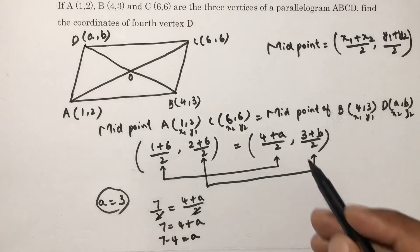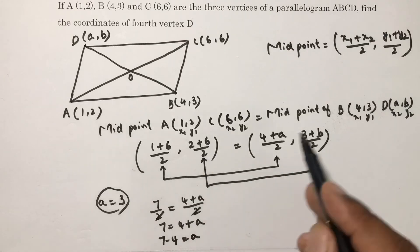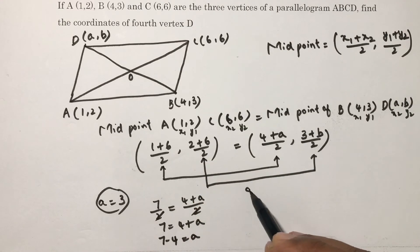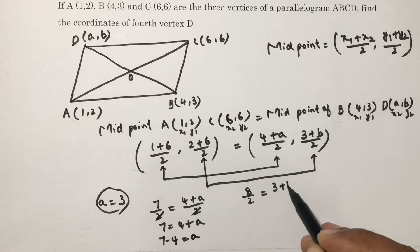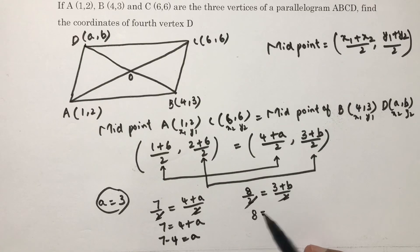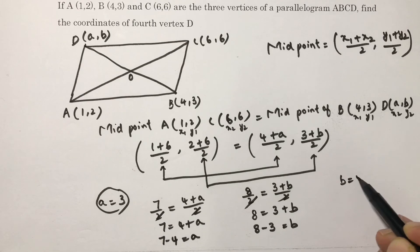Next one, in the same way, equate ordinate with ordinate. 2 plus 6, 8 by 2 equals 3 plus B by 2. 2 and 2 cancel, so 8 equals 3 plus B. 8 minus 3 equals B. 8 minus 3 is 5, therefore the value of B is 5.